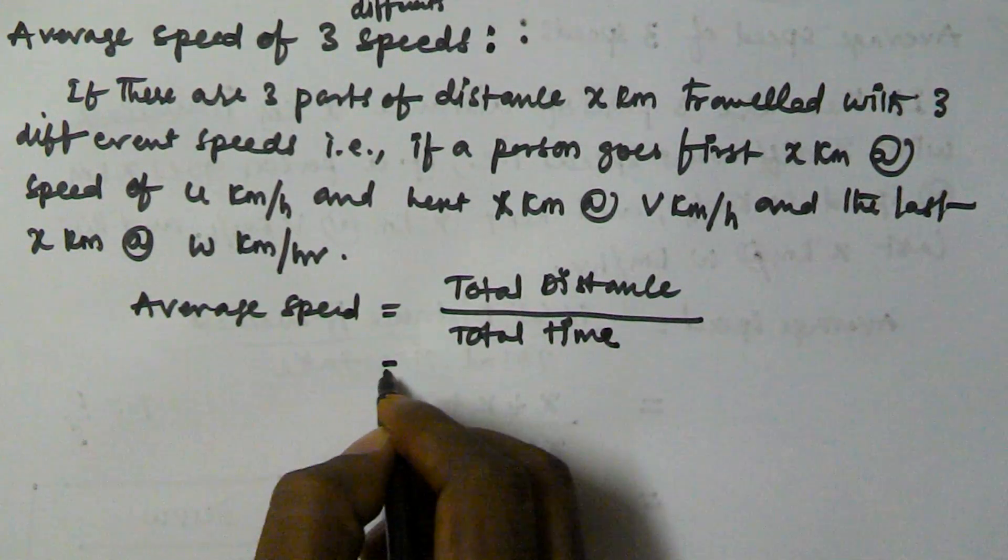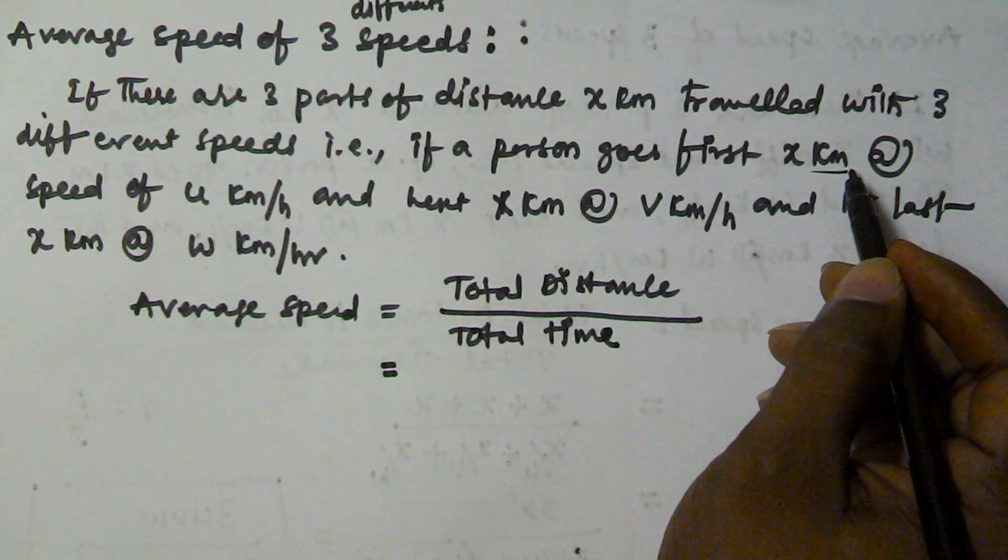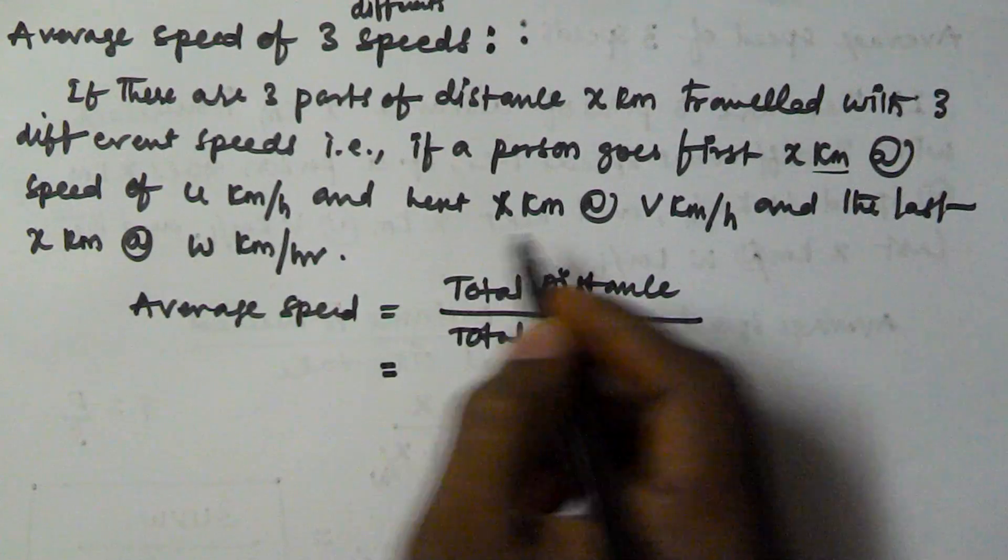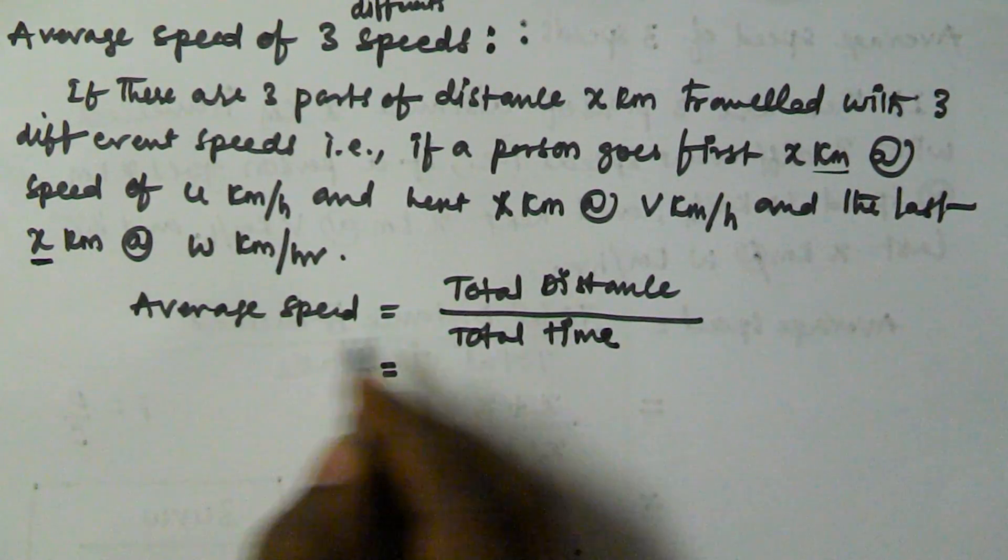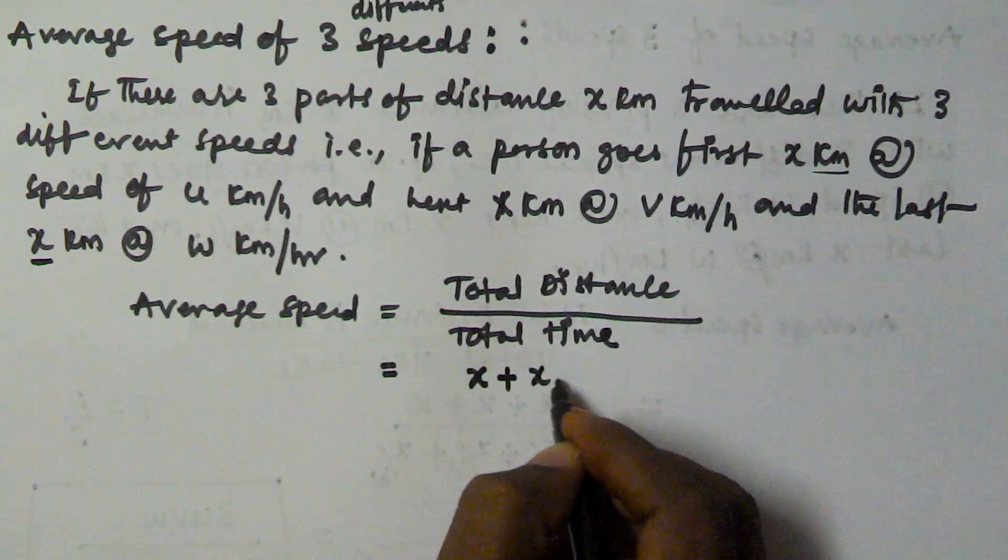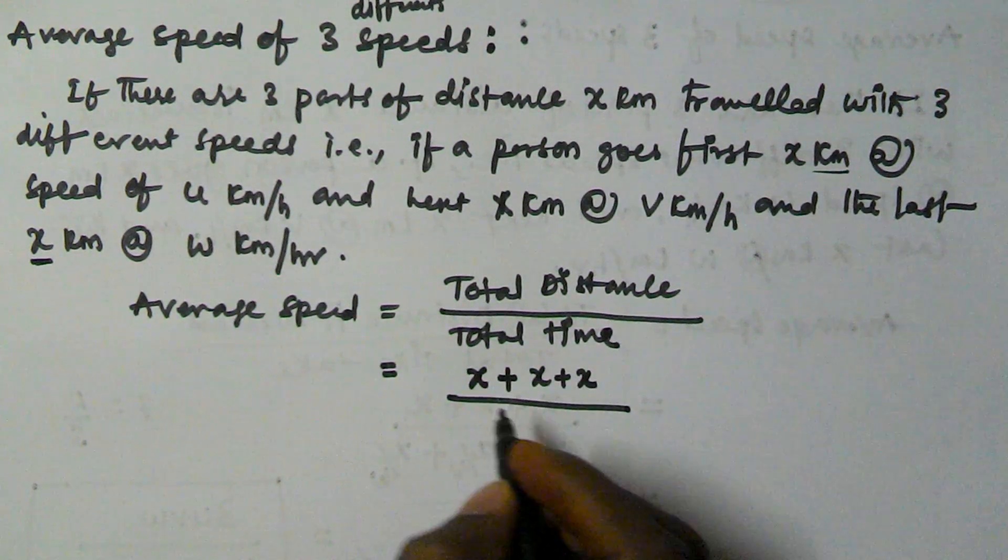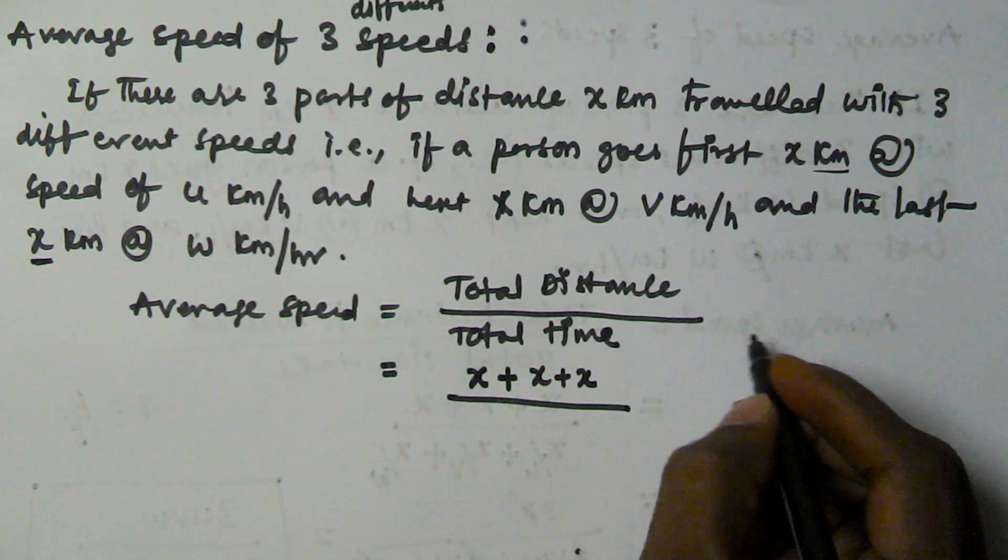So the total distance he traveled: in the first case he traveled x km, in the second case he traveled x km, in the last time he traveled x km. So the total distance he traveled x plus x plus x.